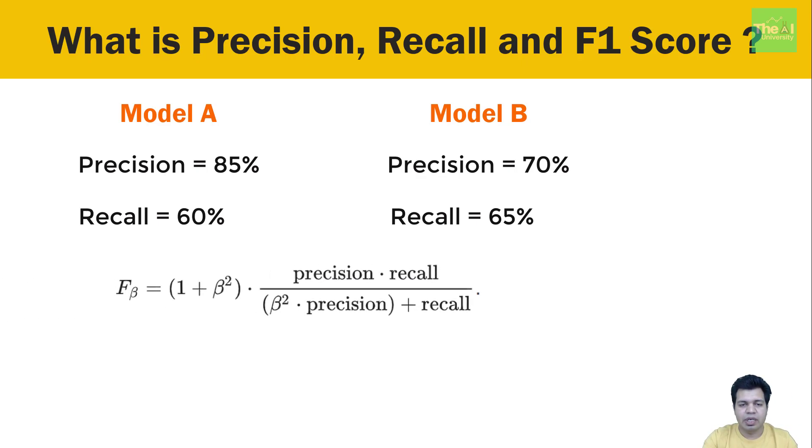It is the weighted harmonic mean of precision and recall. We use the harmonic mean instead of simple average because it punishes extreme values. Here beta is a parameter that determines the importance of precision over recall. The higher the value of beta, the more the importance given to precision. Now the value of beta is set depending upon the type of problem. In certain types of problems, a higher precision is required.